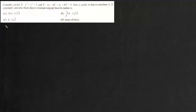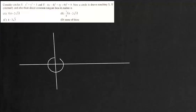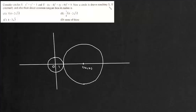Consider the circle x squared plus y squared equals 1. We have this circle centered at the origin with radius 1, and another circle with radius 3. A third circle is touching both circles S and S dash, and also the direct common tangent line. We need to find the radius of this third circle.